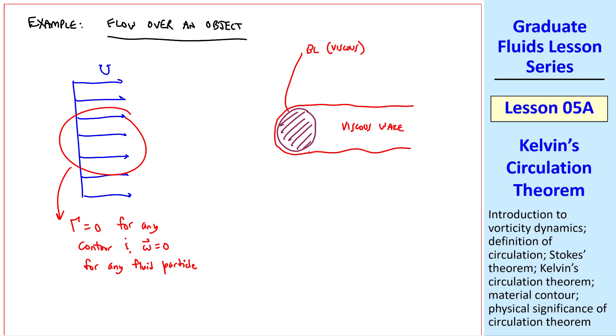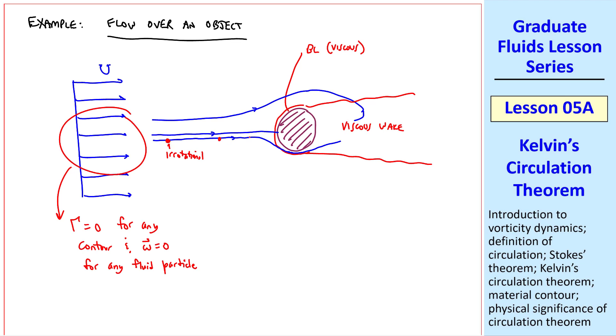If we draw some streamlines, there's one that hits the stagnation point. But a streamline above it must go around the object, and perhaps merge into this viscous wake, which I should have drawn growing. Consider another streamline, very close to the center line, that goes into the boundary layer. A fluid particle here starts out irrotational, or zero vorticity. And it must stay irrotational as it moves along, unless it encounters viscous forces. So it's irrotational everywhere until it gets inside the boundary layer, and now it becomes rotational because of the viscous forces. A particle out here is also irrotational as it moves along, and becomes rotational when it gets into the viscous wake.